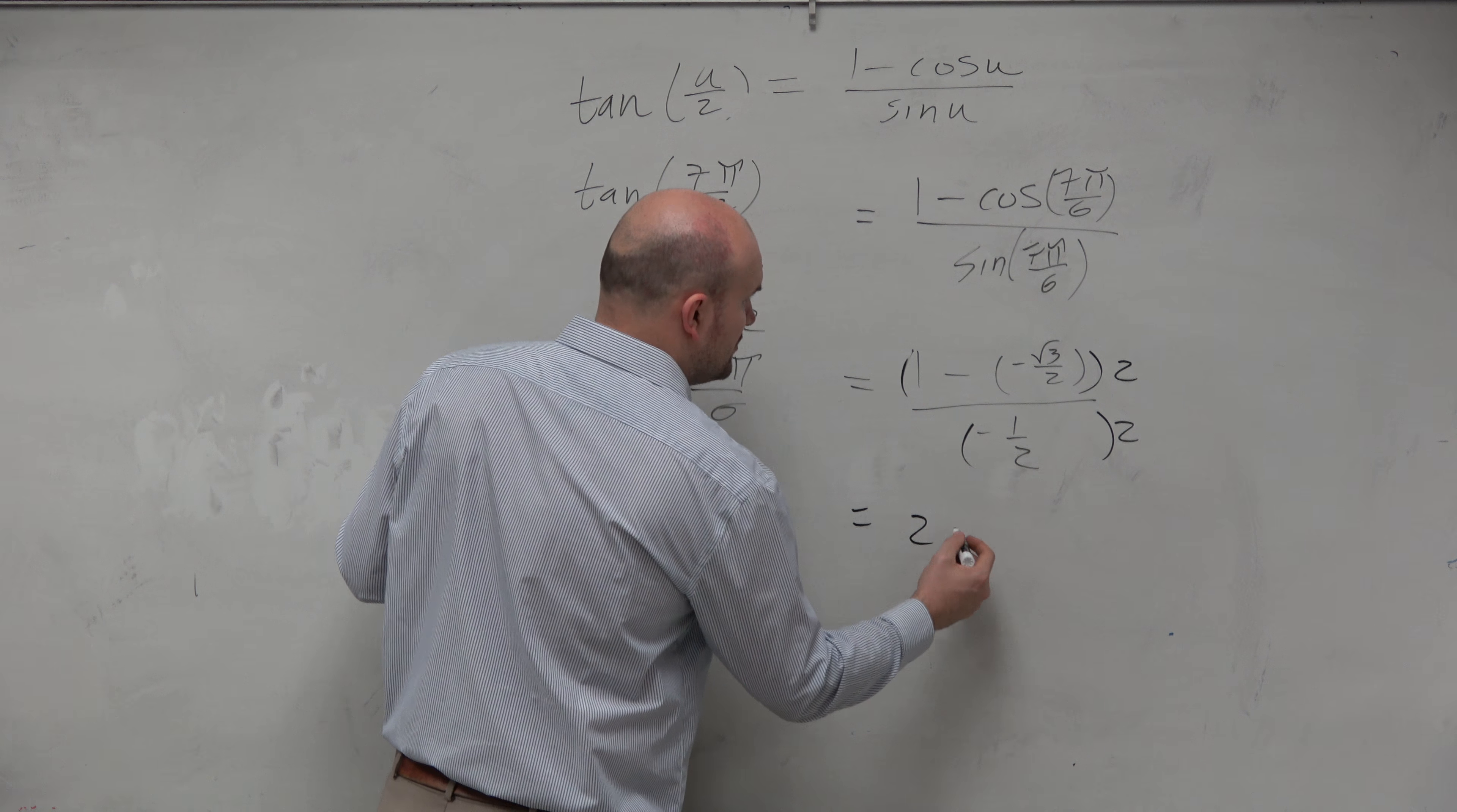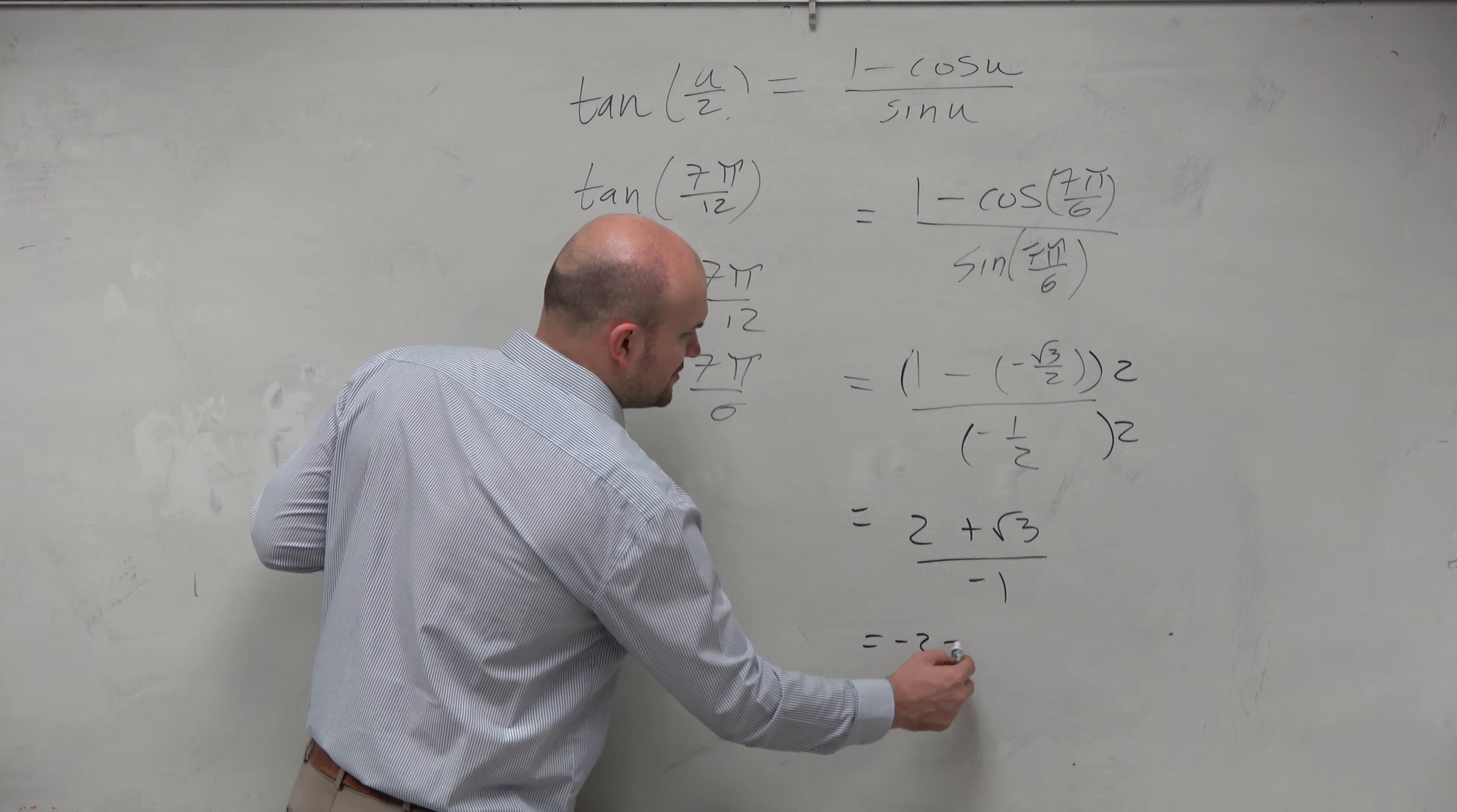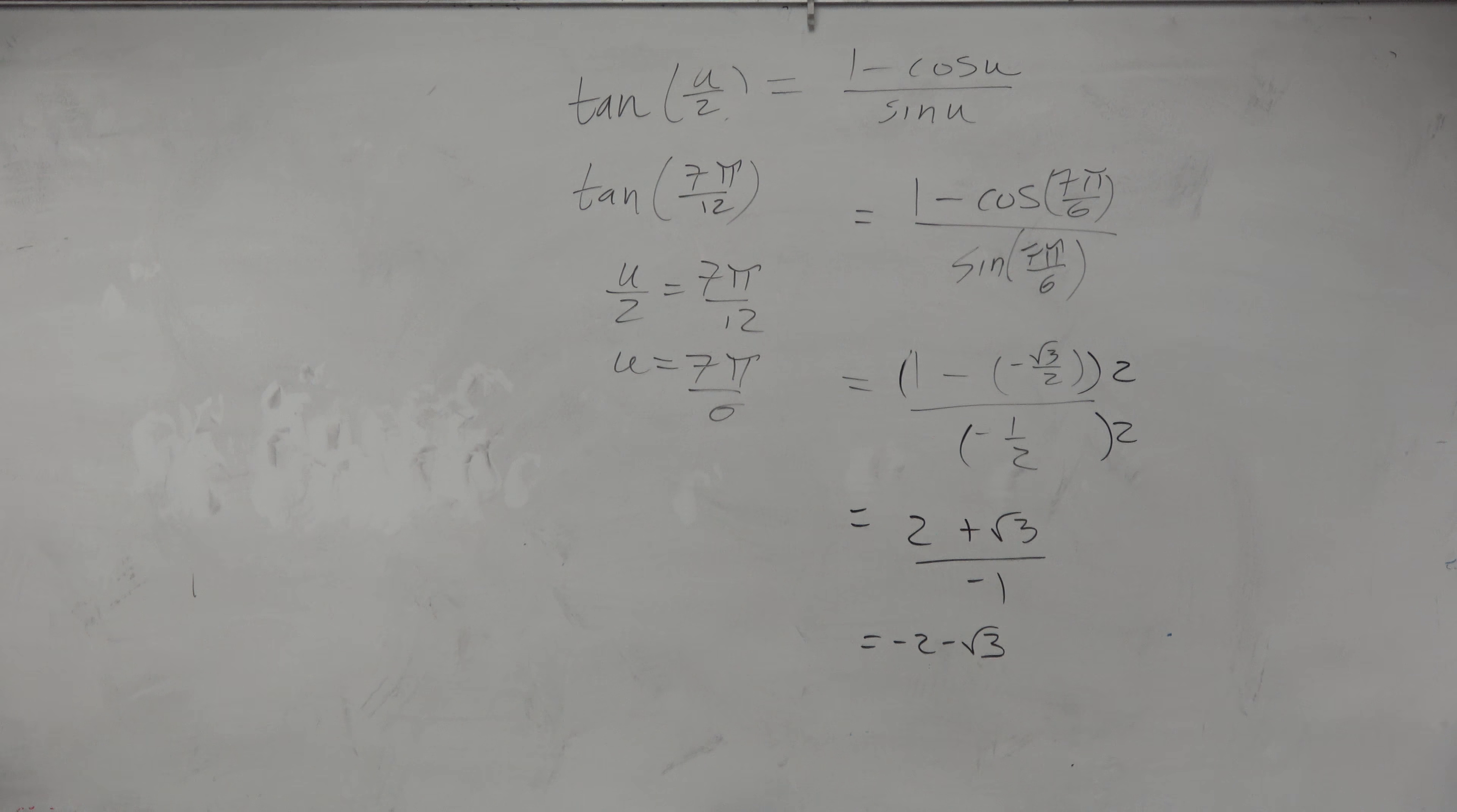And when we do that, we get (2 + √3) / (-1). So could I multiply by negative 2? Sure. Could I multiply by 2? Sure. We just got to divide this into both of them. So it would be -2 - √3. If you would have multiplied by a negative 2, you would have got the same answer.